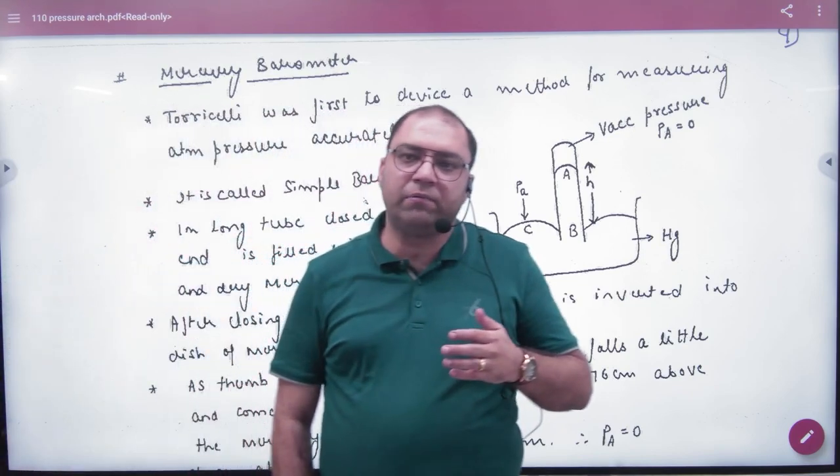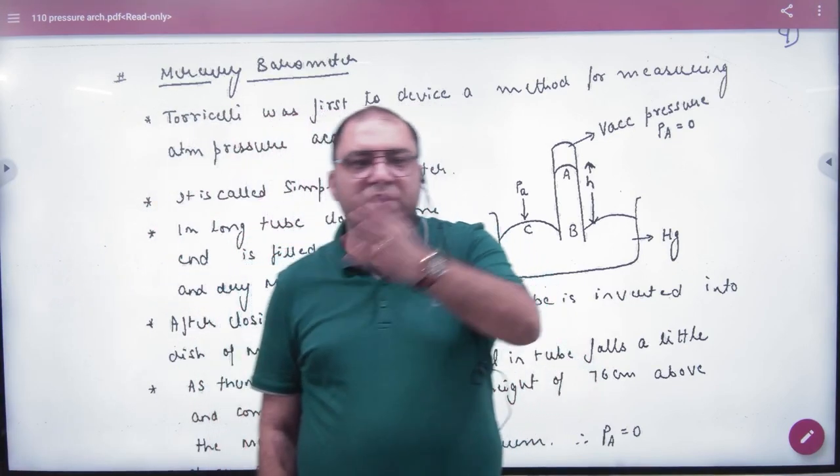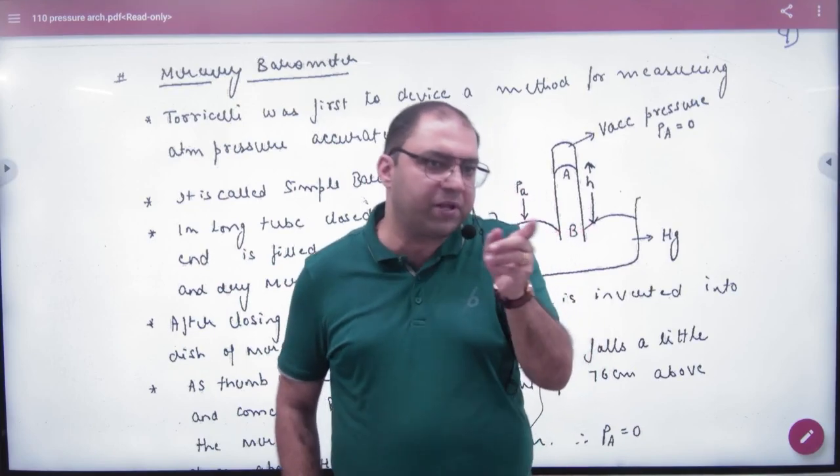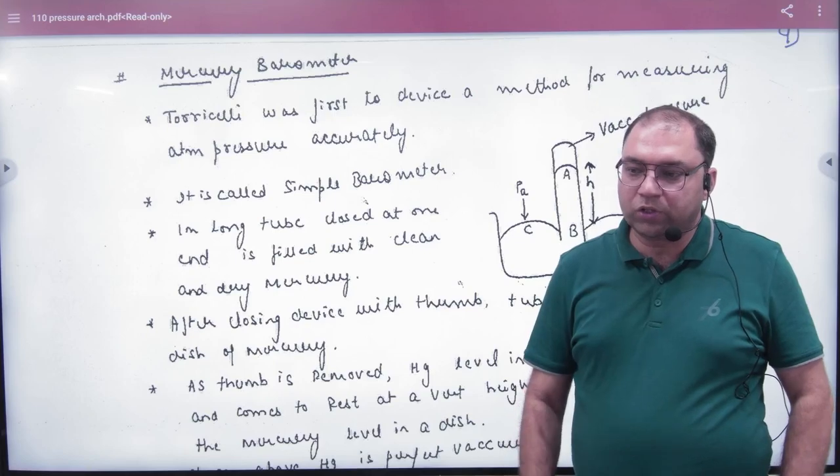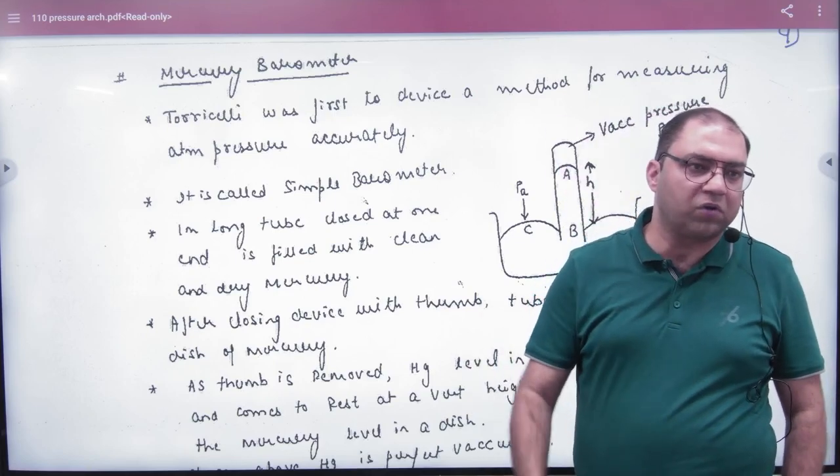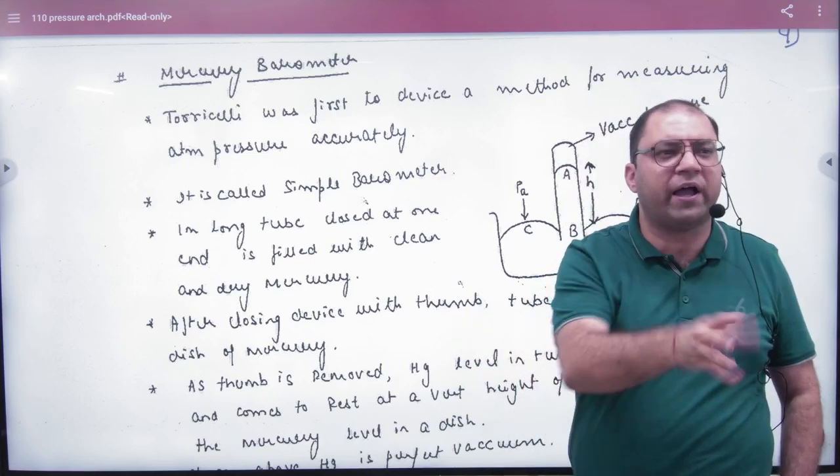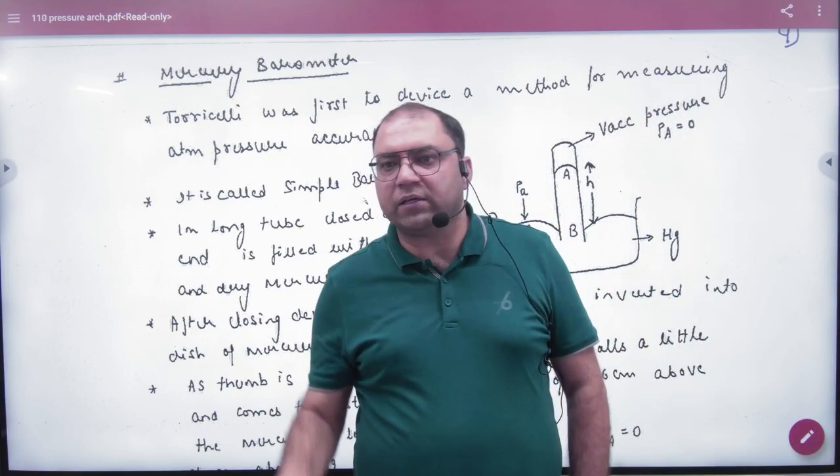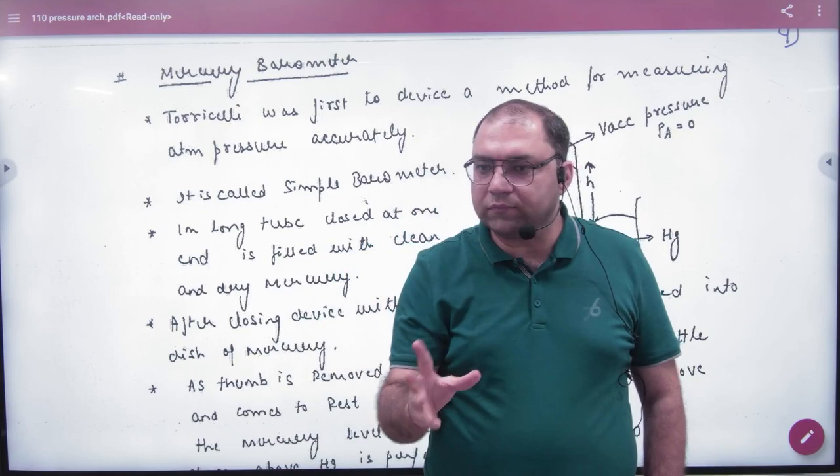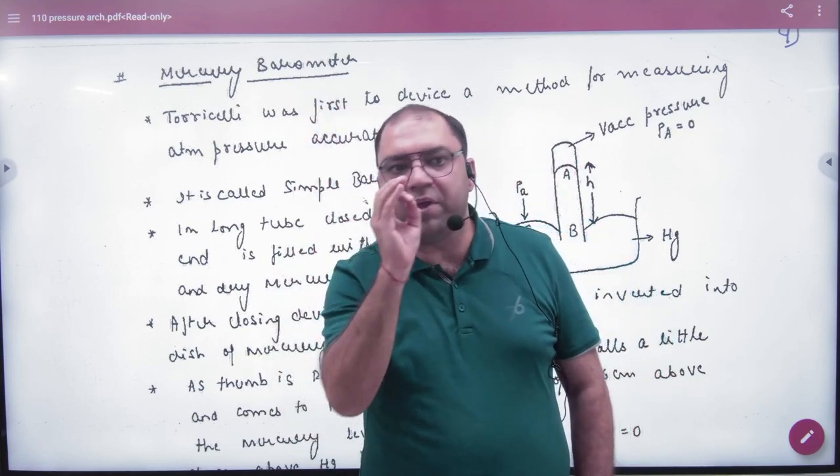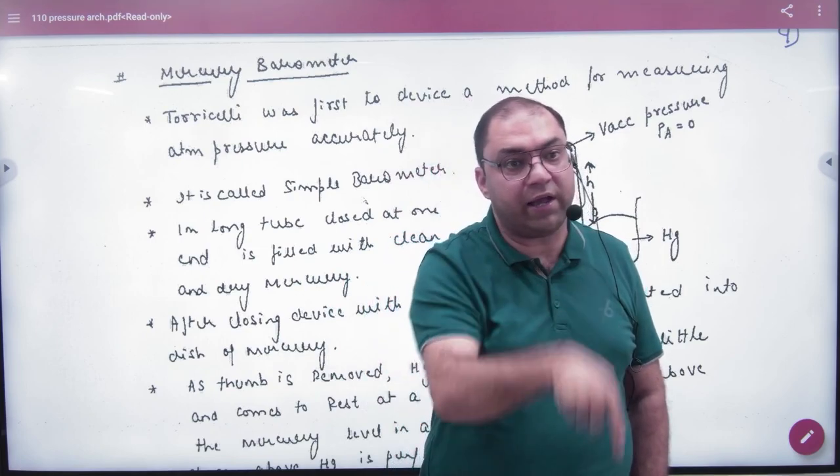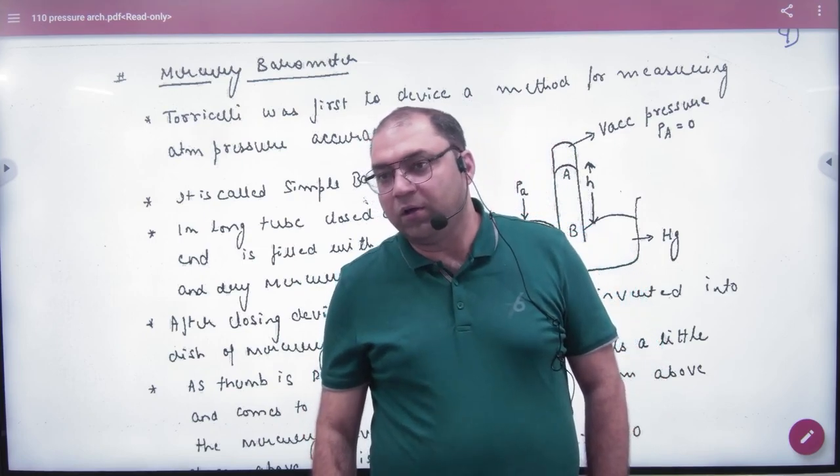So basically, this atmospheric pressure, the first scientist which measured the atmospheric pressure was called Torricelli. Torricelli's name will come up a lot in physics. So what did Torricelli do? At that time, he measured the value of atmospheric pressure accurately and showed it through experiment.